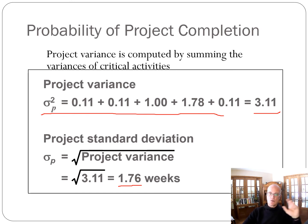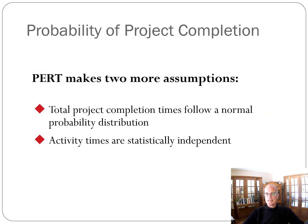So then, we've drawn the network, we've figured out the project variance, now we can start looking at how to do these calculations. PERT makes two more assumptions that I think are worth knowing. These often show up as multiple choice questions on exams, but not usually on an assignment. These are good things to know, and I would review them in the textbook. Total project completion times follow a normal probability distribution, and activity times are statistically independent. That means that the completion time of this activity is completely independent of the completion time of this activity.